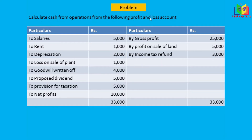Now we'll see one problem: calculate cash from operations from the following profit and loss account. The profit and loss account is given, and using this we have to find the cash from operations as per the format. The P&L account includes salary, rent, depreciation, loss on sale of plant, goodwill written off, proposed dividend, provision for taxation.